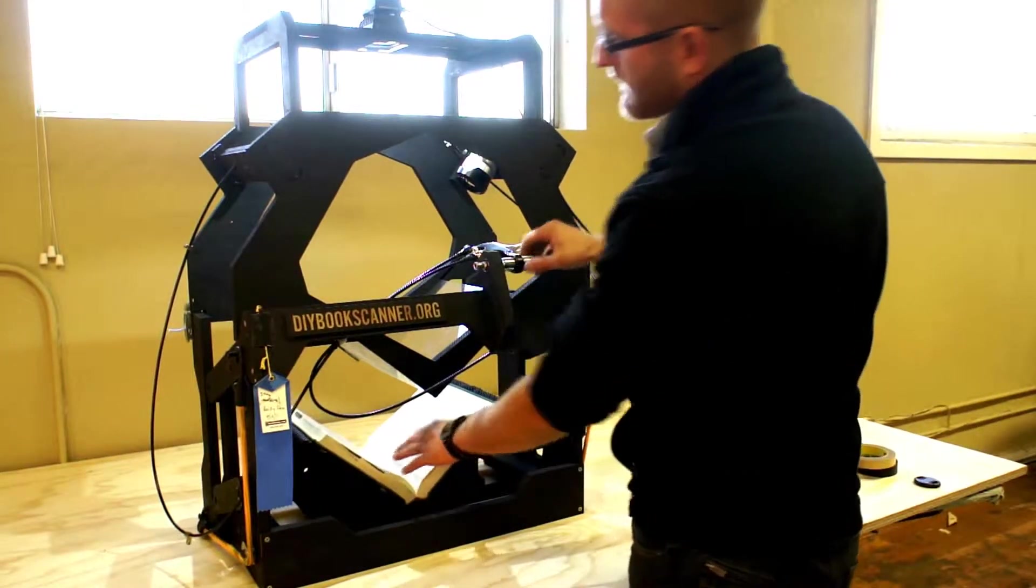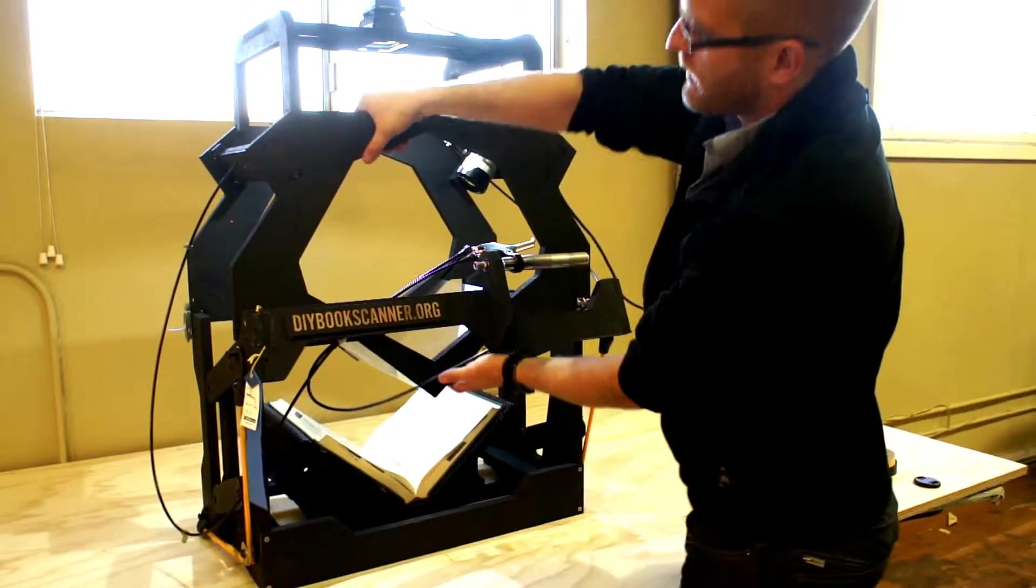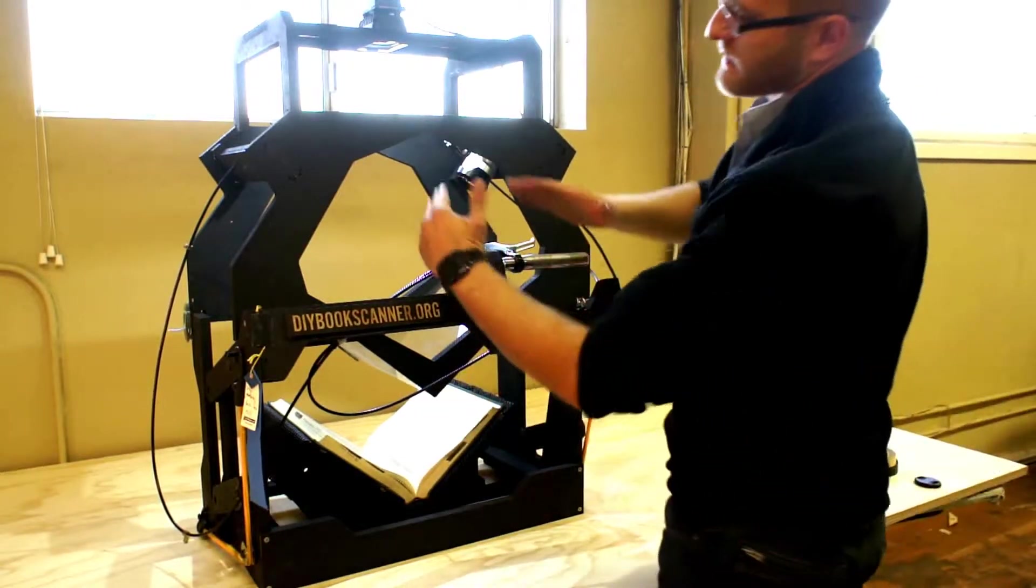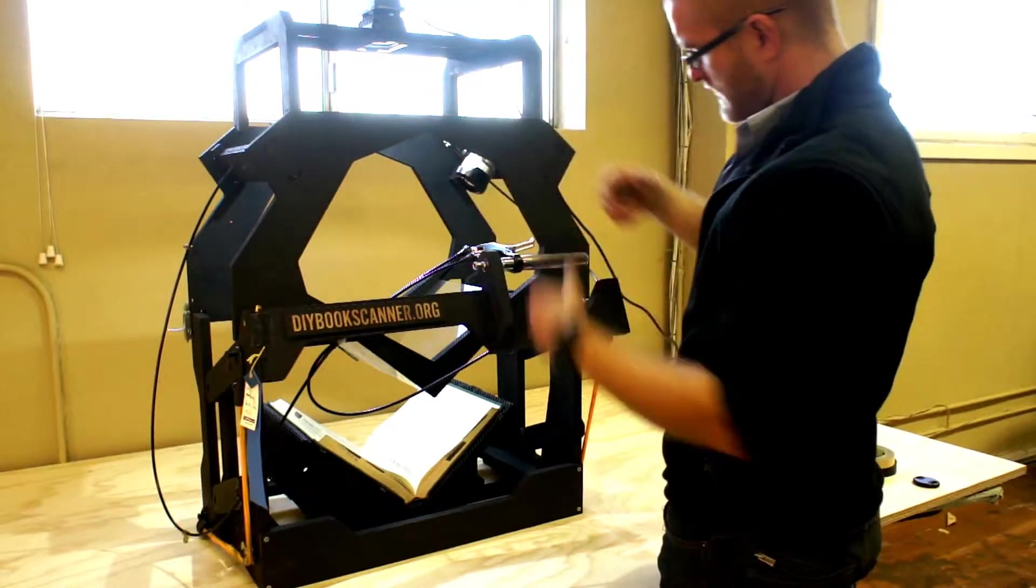And the design of this scanner is such that this whole top piece can be removed, flipped over, and the bottom of the glass V becomes a roof where you can lay your paperback book and scan at a high rate of speed.